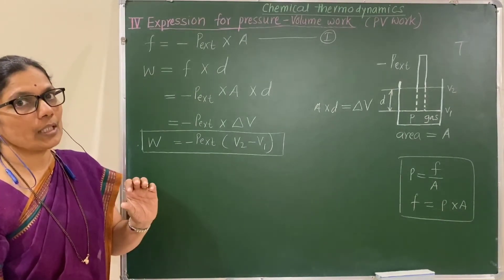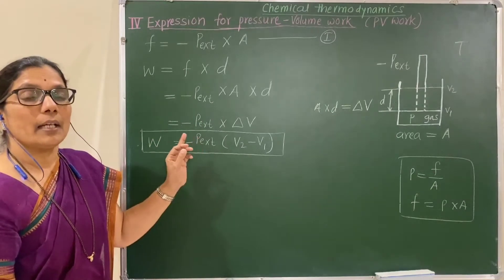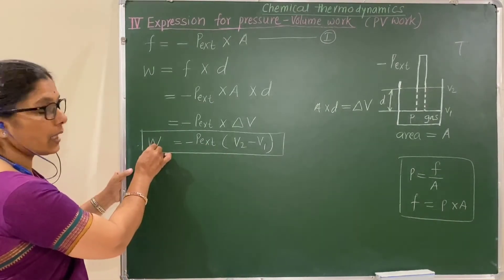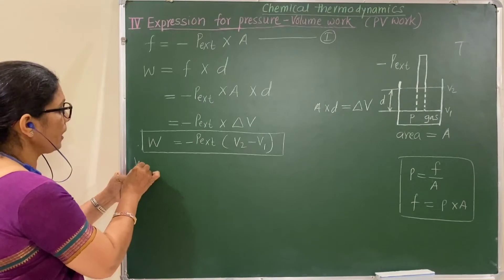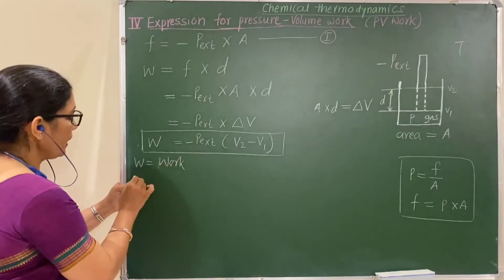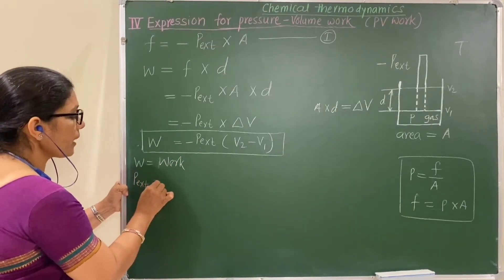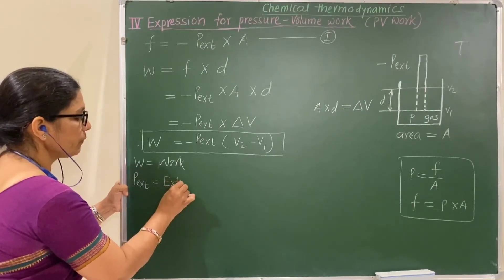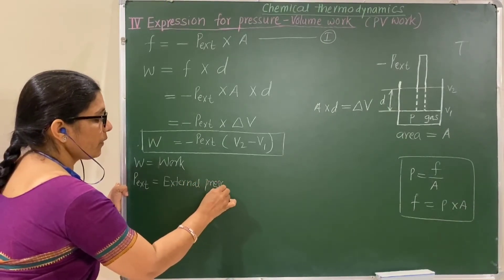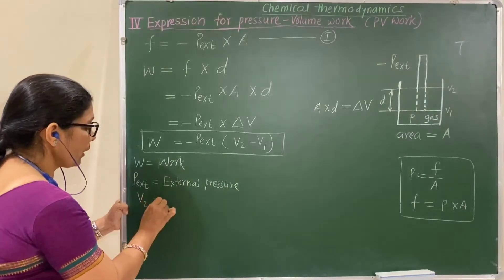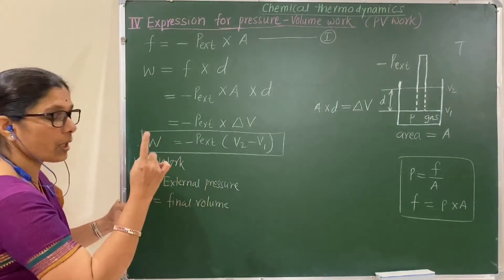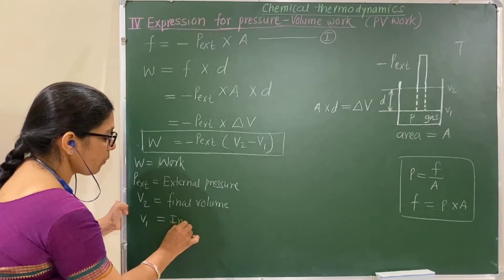When any derivation is asked, derive the formula and write the meaning of the terms involved. Here, W is the PV type work; P_external is the constant external pressure; V2 is the final volume; and V1 is the initial volume. Always remember to mention the meaning of the terms.